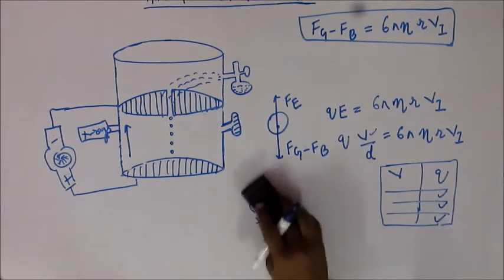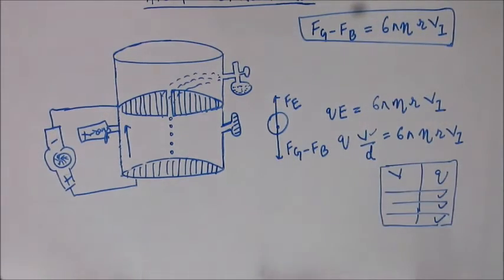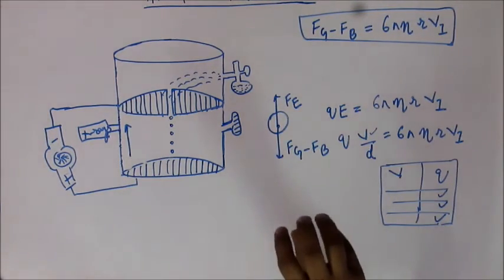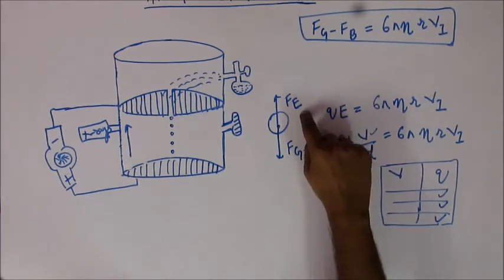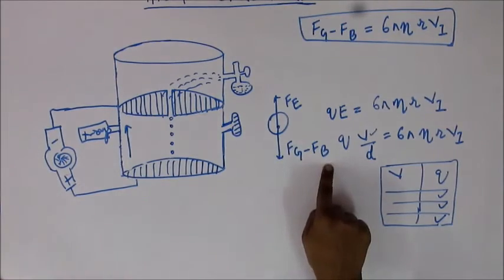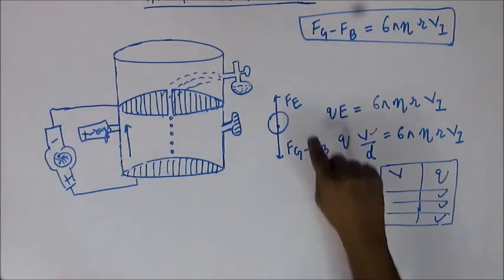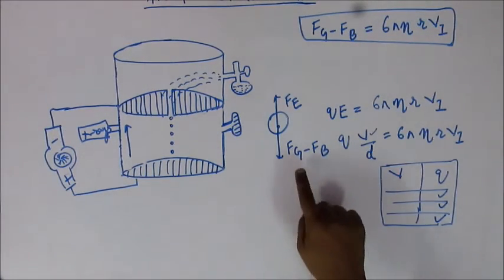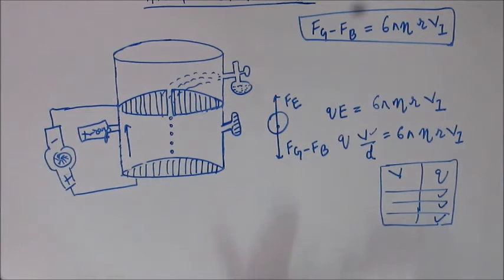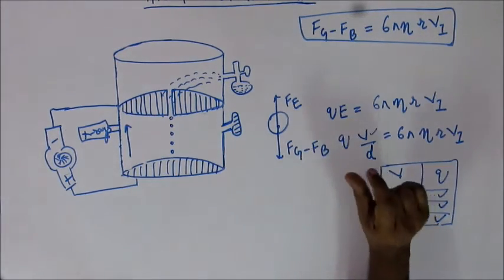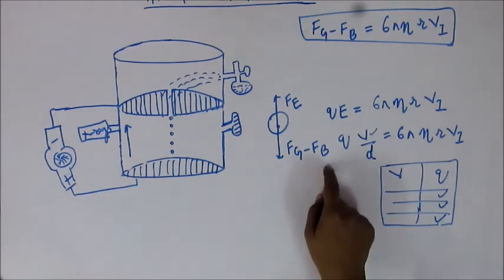Before we go into reading the chart, one thing: this is not the most probable case that the oil drop will be suspended in the air. For this to happen, the electric force has to be exactly equal to Fg minus Fb, and that is a very difficult task. You are varying the voltage and you need to reach such a value that electric force becomes exactly equal to Fg minus Fb — you will be singularly lucky if you can do that. That won't happen practically.